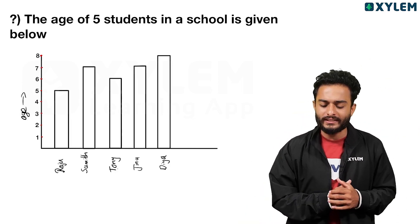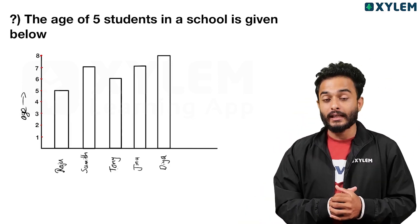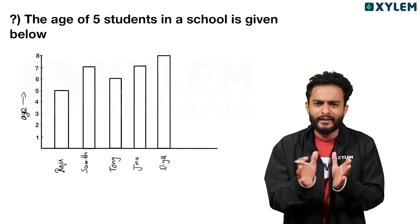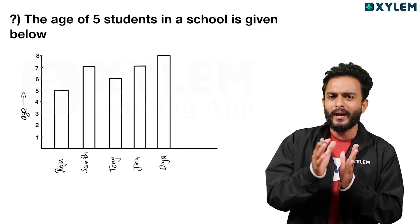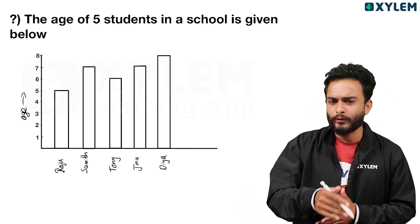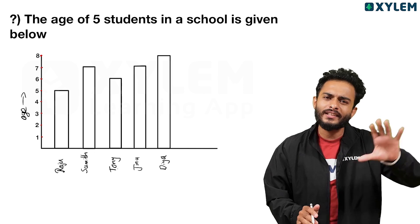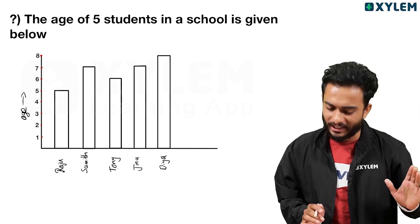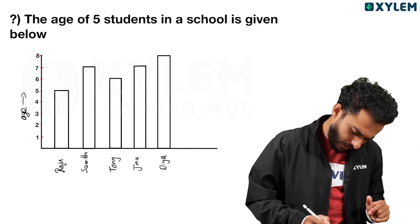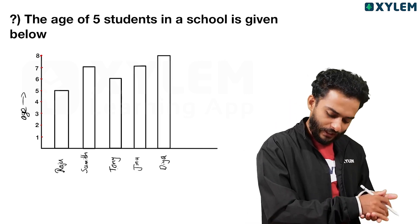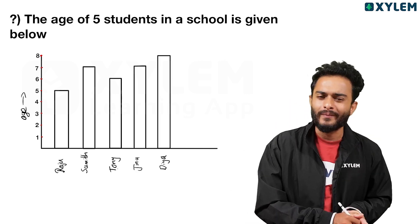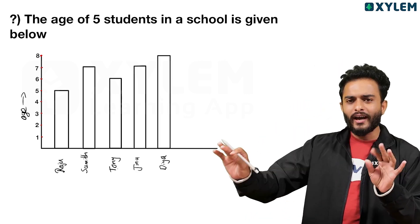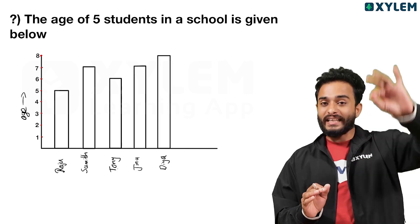The age of 5 students in a school is given below. I am going to take a bar graph and look at the information. On the Y-axis, we have age. The X-axis is horizontal and the Y-axis is vertical.